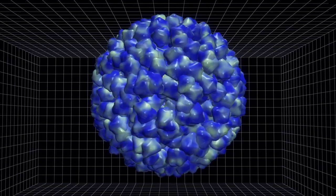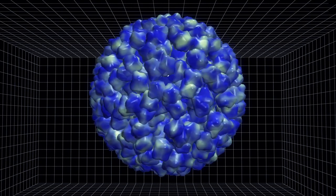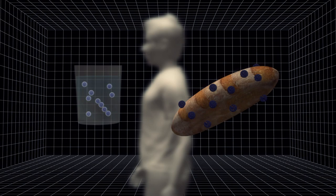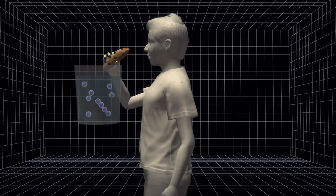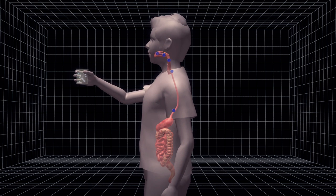Polio is a viral infectious disease spread from person to person. The virus easily spreads through the fecal-oral route via contaminated water or food.